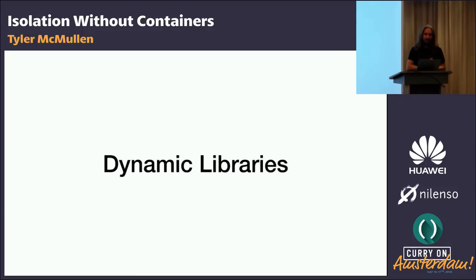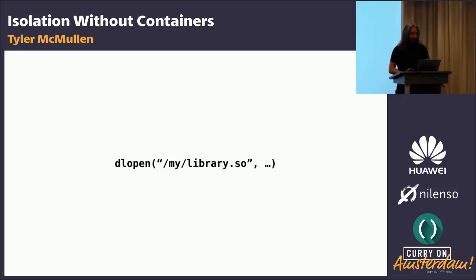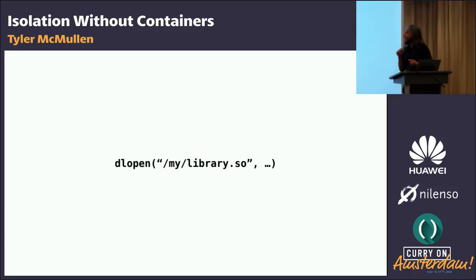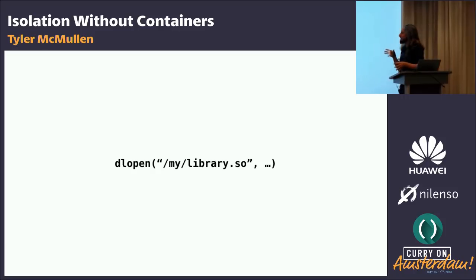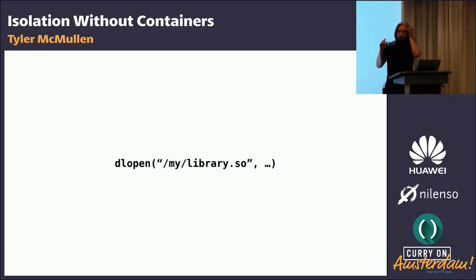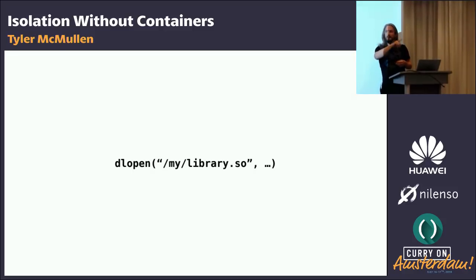Let's talk about dynamic libraries. What I'm talking about is literally DLopen. Especially in the past, and even still today, DLopen is often used to provide a plugin-type system — essentially, I have this program and I want to be able to load this other library into it and execute that code in the context of my program.